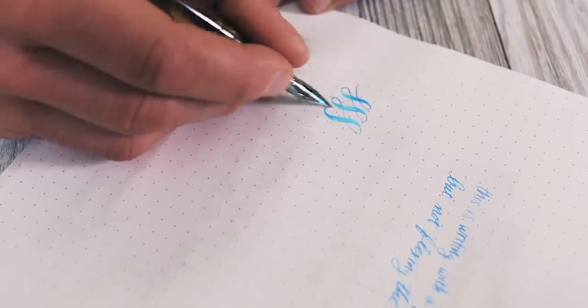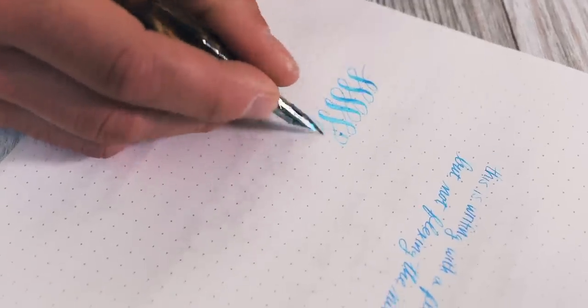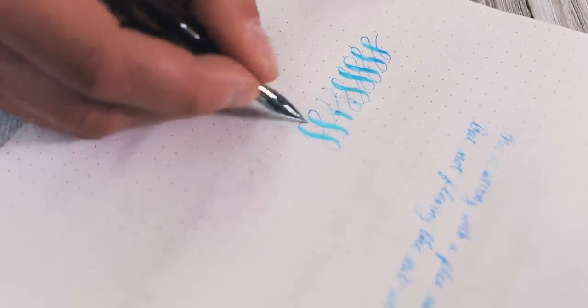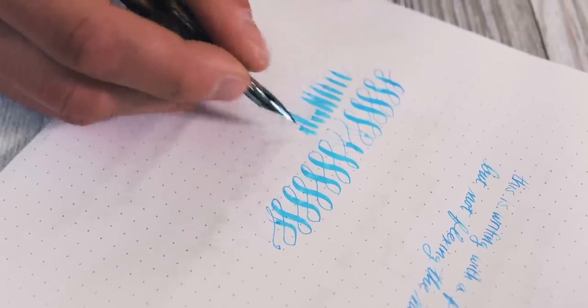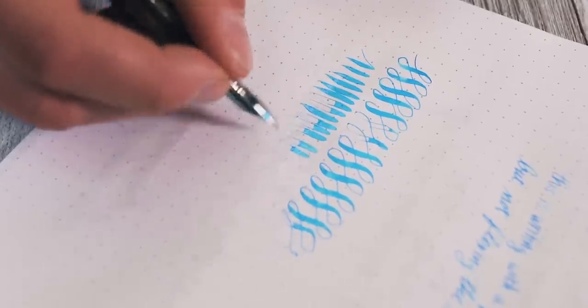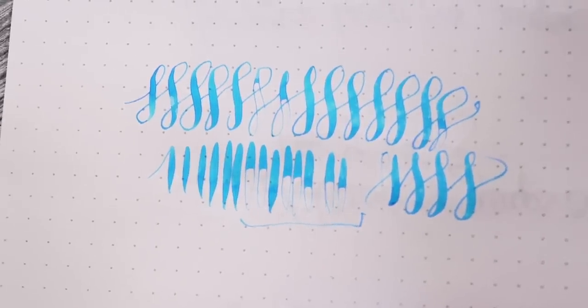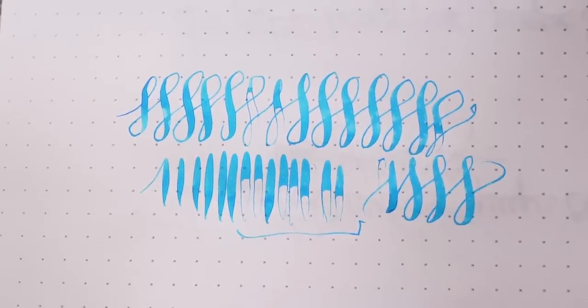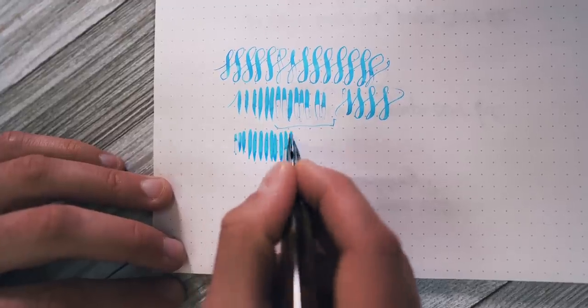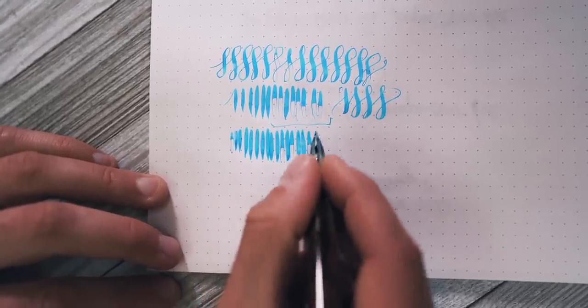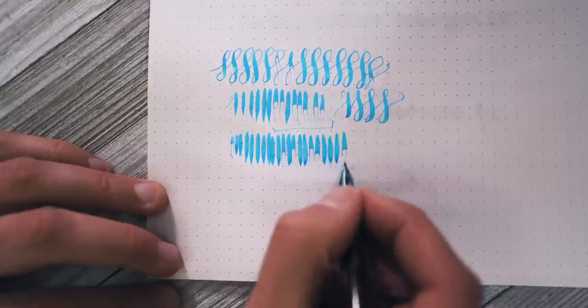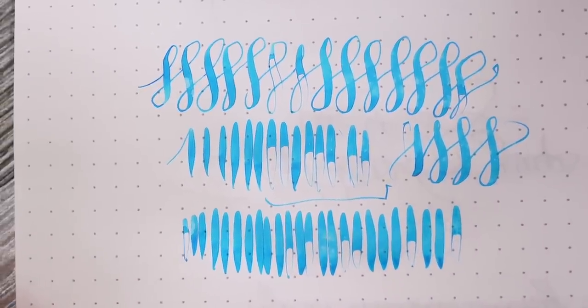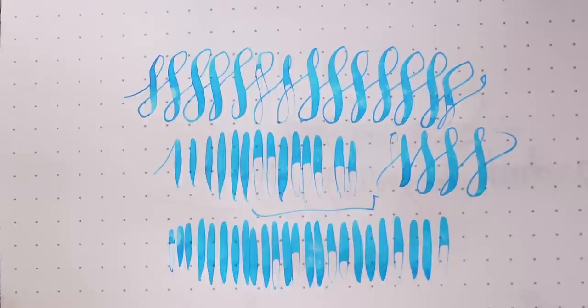Fountain pen noobs may also be new to the idea of tinkering with their pens to remedy ink flow issues that might arise with using flex nibs. Railroading is one of those problems that can give a novice flex writer unending grief. It's when the nib becomes starved of ink when flexing. Instead of drawing a swell of ink on the paper, an outline of the stroke is left behind. There are various reasons to troubleshoot, but a newbie may not have the patience for it.